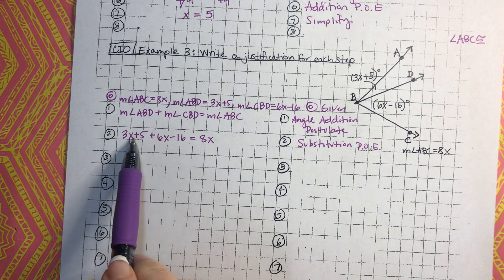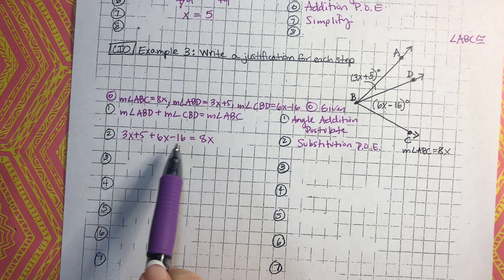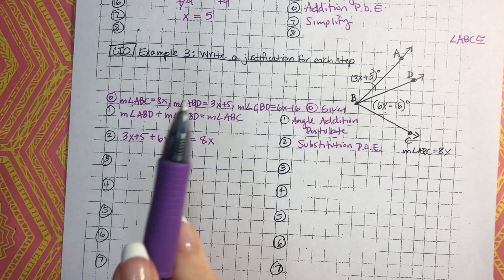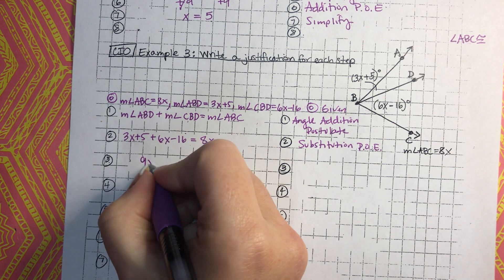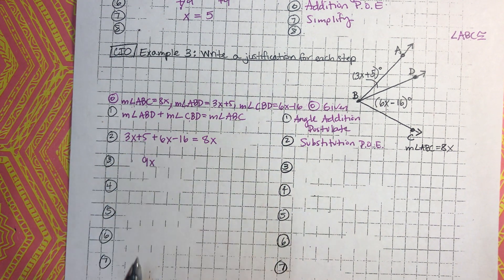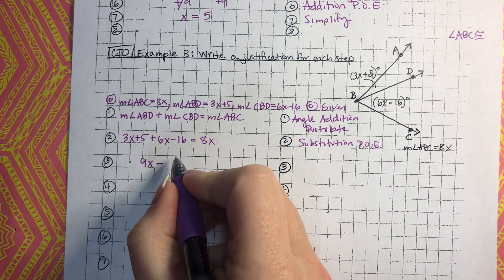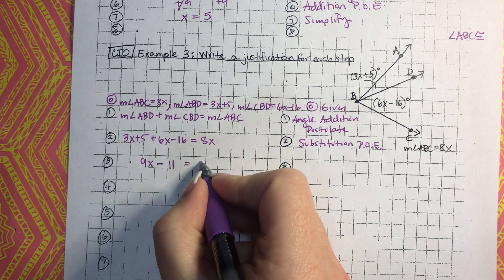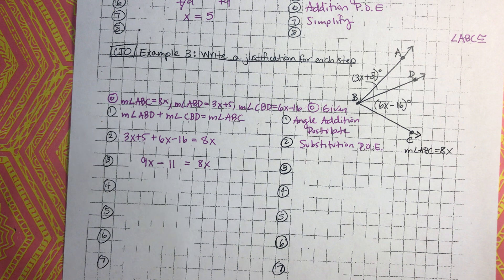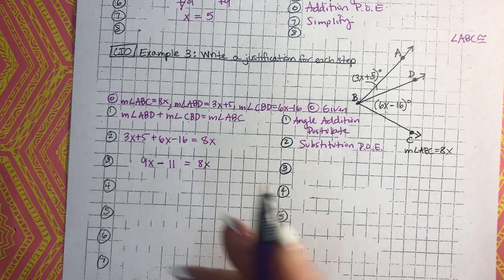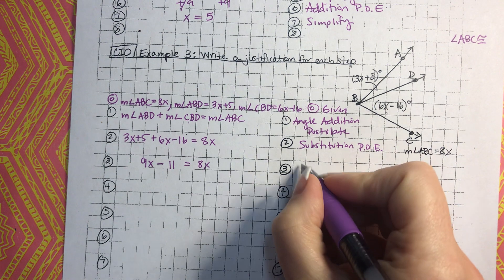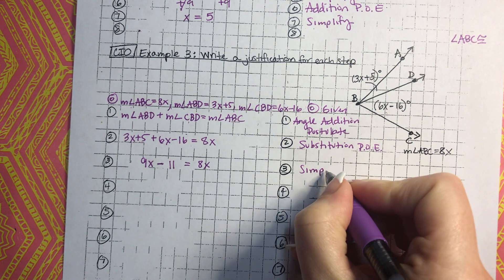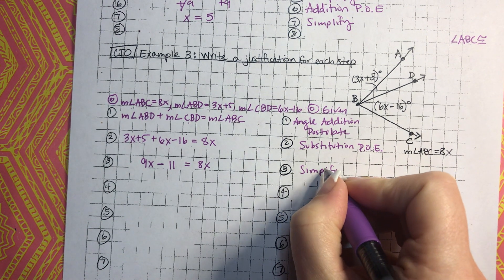From here, we simplify this side of the equation by combining like terms. We have 3x and 6x, which gives 9x. Then 5 minus 16 is negative 11, so we get 9x minus 11 equals 8x. That is simplify.